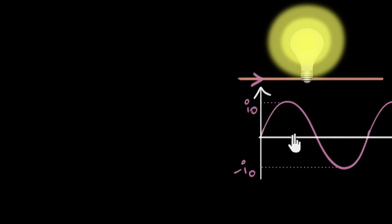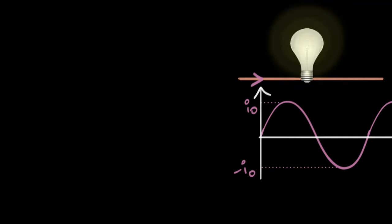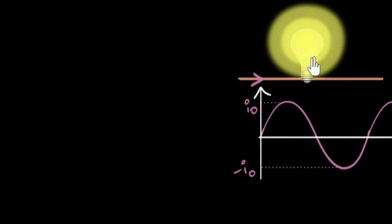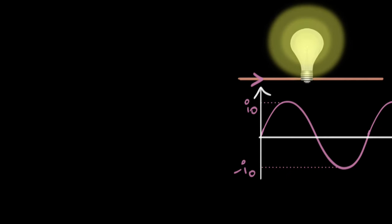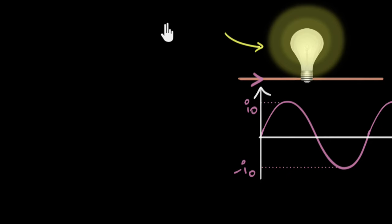As the current fluctuates, the power dissipated also fluctuates. In India this fluctuation is happening about 50 times per second, so the fluctuations are happening so fast our eyes cannot make it out. Instead, we will see some kind of average power or average brightness somewhere between maximum and zero — that average power being dissipated in this resistor due to the alternating current.